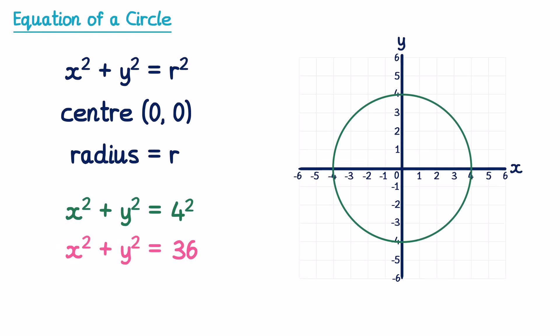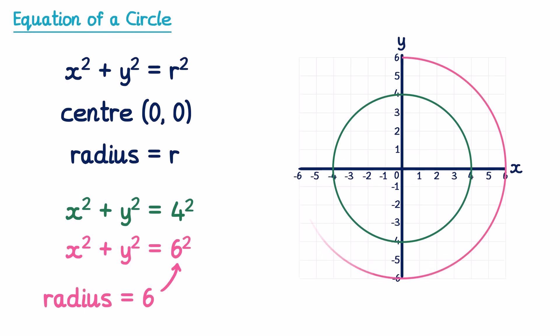And if we had x² + y² = 36, we need to rewrite 36 as something squared. The square root of 36 is just 6, so x² + y² = 6², and the radius is 6. So it looks something like this.